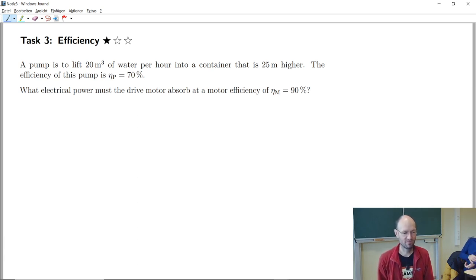So this third task is about a pump that lifts up a certain amount of water into a container that is 25 meters higher and the efficiency of the pump is given by 70 percent and we should calculate the electrical power for some drive motor. The efficiency of the motor is given by 90 percent. So you have a garden somewhere on a hill, you have a swimming pool with 20 cubic meters and your guests will arrive in one hour. So the question is what pump do you need to fill the swimming pool right on time before your guests arrive?